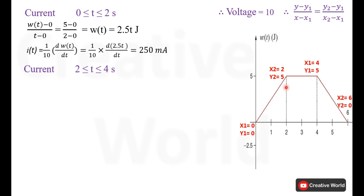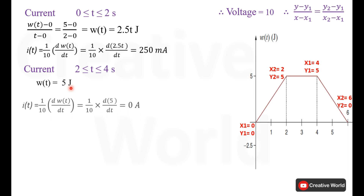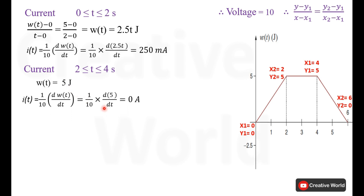Between time interval 2 and 4 seconds, our energy is not changing — energy is 5 joules. By taking its derivative, we know that the derivative of a constant is 0, so in this case our current will be 0 between time interval 2 and 4 seconds.